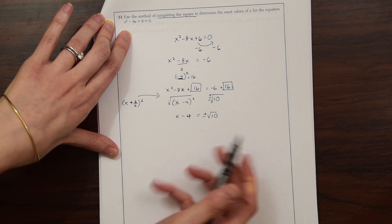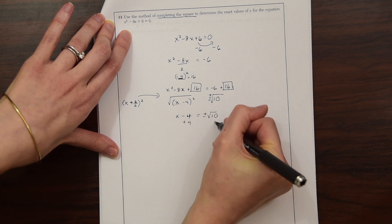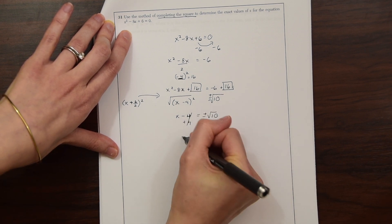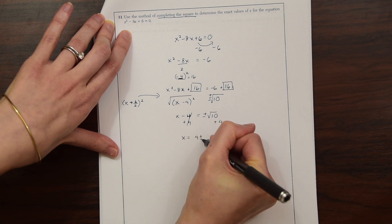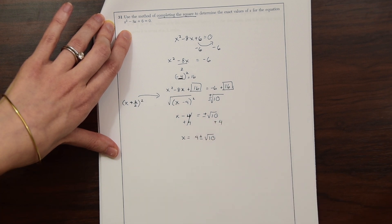So we get x minus 4 equals plus or minus radical 10. And then now, we want to get x alone. So all we have to do is add 4 to both sides. We do that, and we get x equals 4 plus or minus radical 10. And that's our answer.